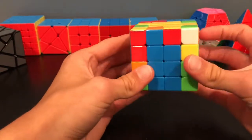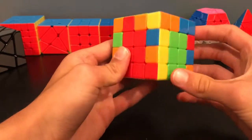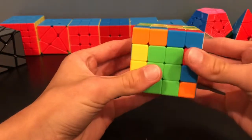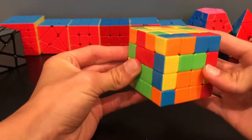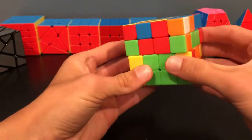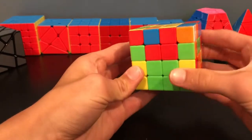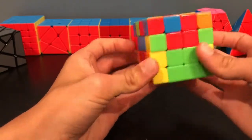So what we're going to do is advanced edge pairing, which basically pairs up multiple edges at once. So you'll start by just doing a slice. Oh, and this one got paired up. So what you want to do is before you slice back, you'll want to set up the cube. So when you slice back, you build three edges.